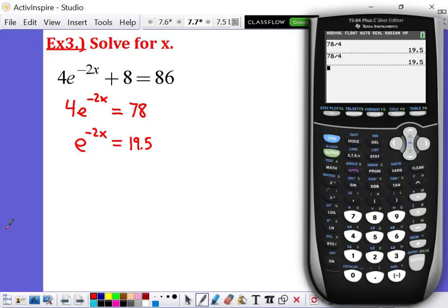All right, from here, to solve for X, to get access to this X, which is located in the exponent, I need to write this as a log function. But remember, because we're using base E, we get to use that special log, the natural log, of 19.5 equals negative 2X.